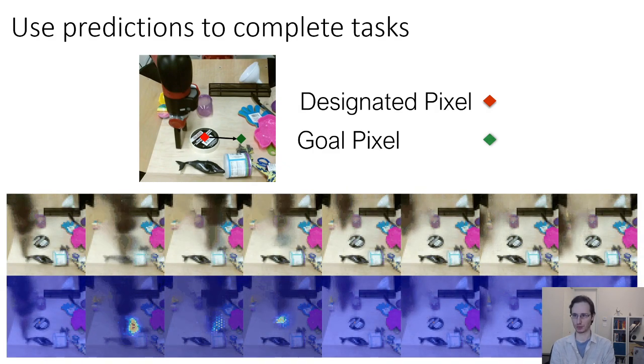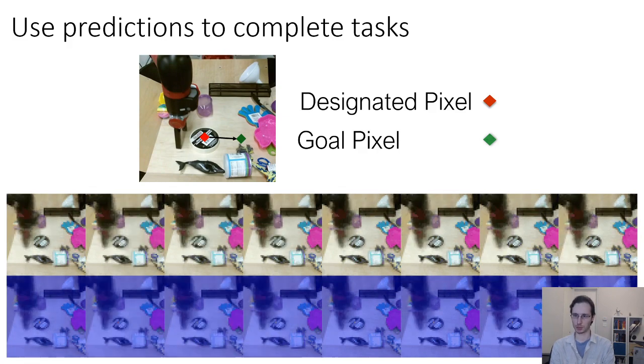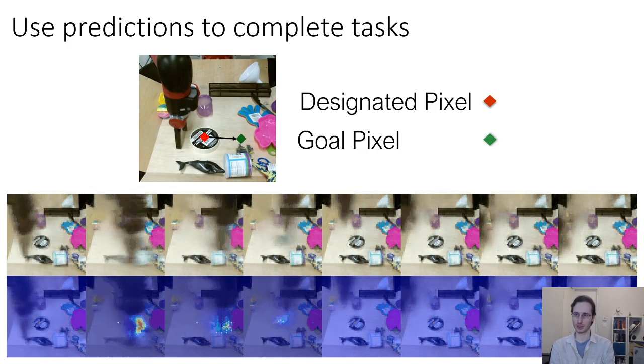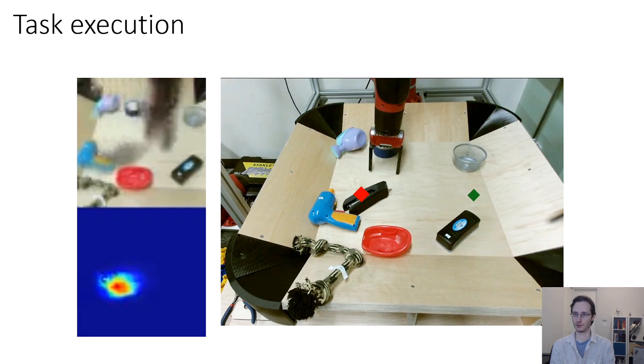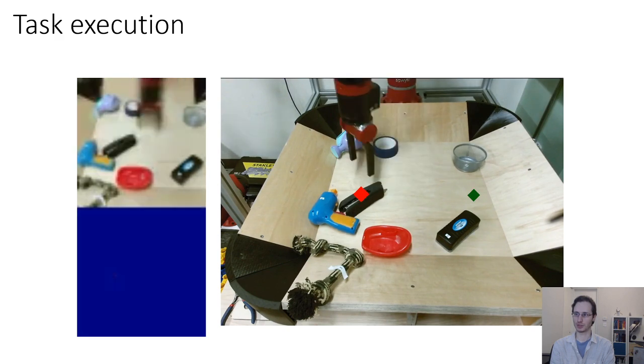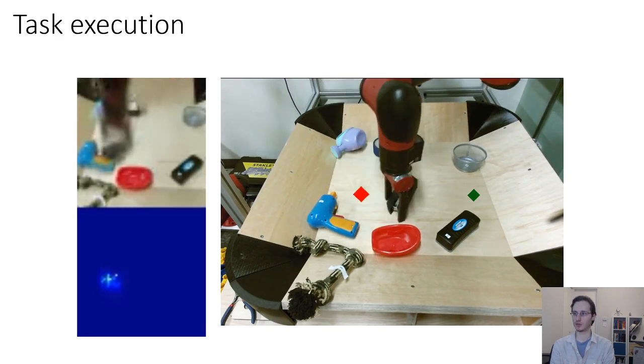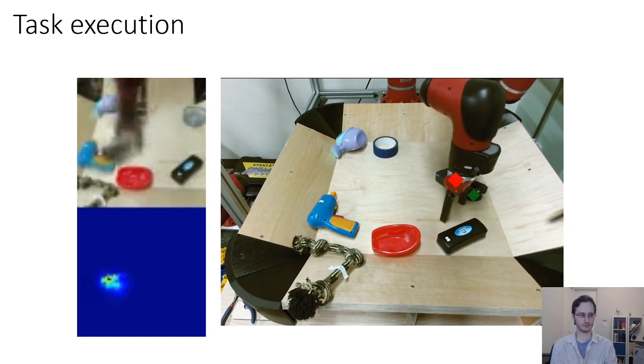And then you could direct the robot to do a particular thing by, for example, telling it, this particular point in the image, move it to this location. And then it figures out actions that lead to that outcome. And you can do things like reach out and grab a stapler. So, here is the animation of what the model thinks is going to happen. And when it actually goes and does it, it reaches out, puts the hand on the stapler, and then pushes it to the desired location.